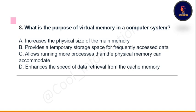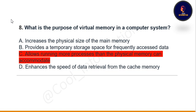Next question: what is the purpose of virtual memory in a computer system? Option A: increase the physical size of the main memory. Option B: provides a temporary storage space for frequently accessed data. Option C: allows running more processes than the physical memory can accommodate. Option D: enhances the speed of data retrieval from the cache memory. The correct option is C — allows running more processes than the physical memory can accommodate.